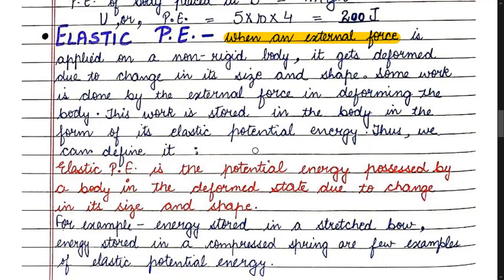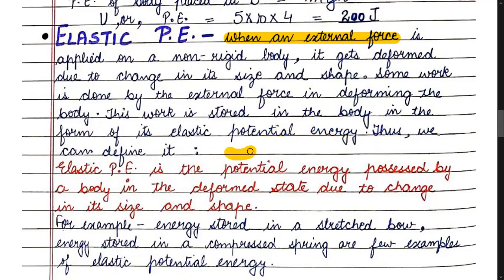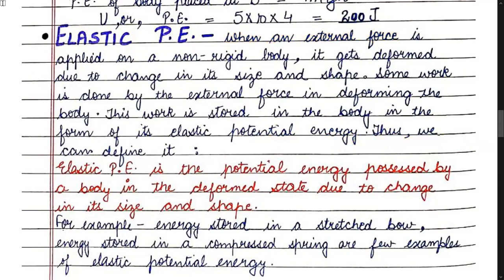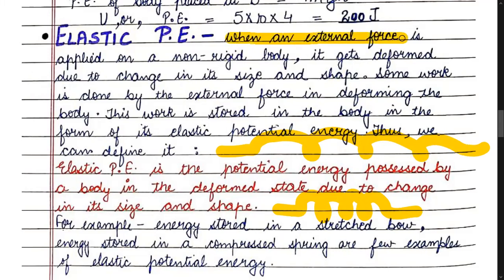When an external force is applied on a non-rigid body, the body gets deformed due to change in its size and shape. For example, if you apply force on the spring and stretch it, you change its actual shape. But when you stop applying force, the spring comes back to its original shape.